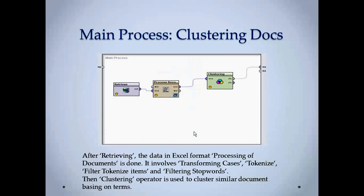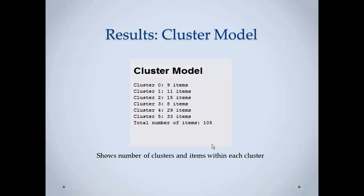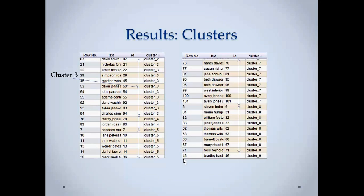The main process in clustering documents is one of the most crucial parts in resume clustering and sorting. It is like retrieving the data, simple processing of the documents and then operating clustering operator. Clustering operator is used to cluster similar documents based on similar terms. If you carry on this operator, then it will make a cluster model. As I have told that to make 6 clusters, it has divided those items into different categories. Cluster 0 has 9 items, cluster 1 has 11 items.